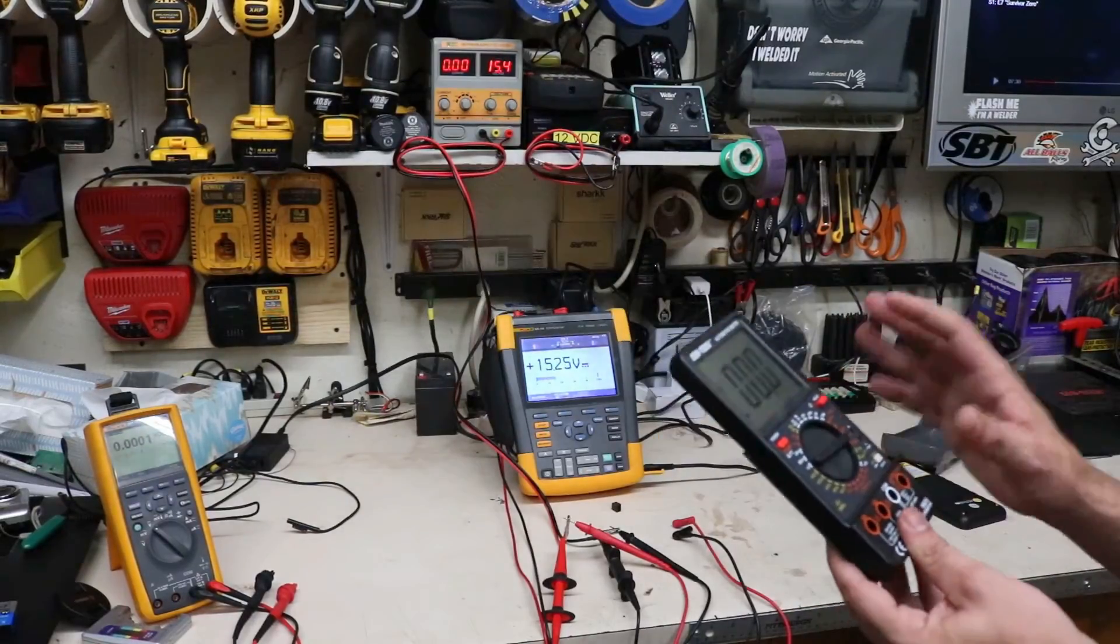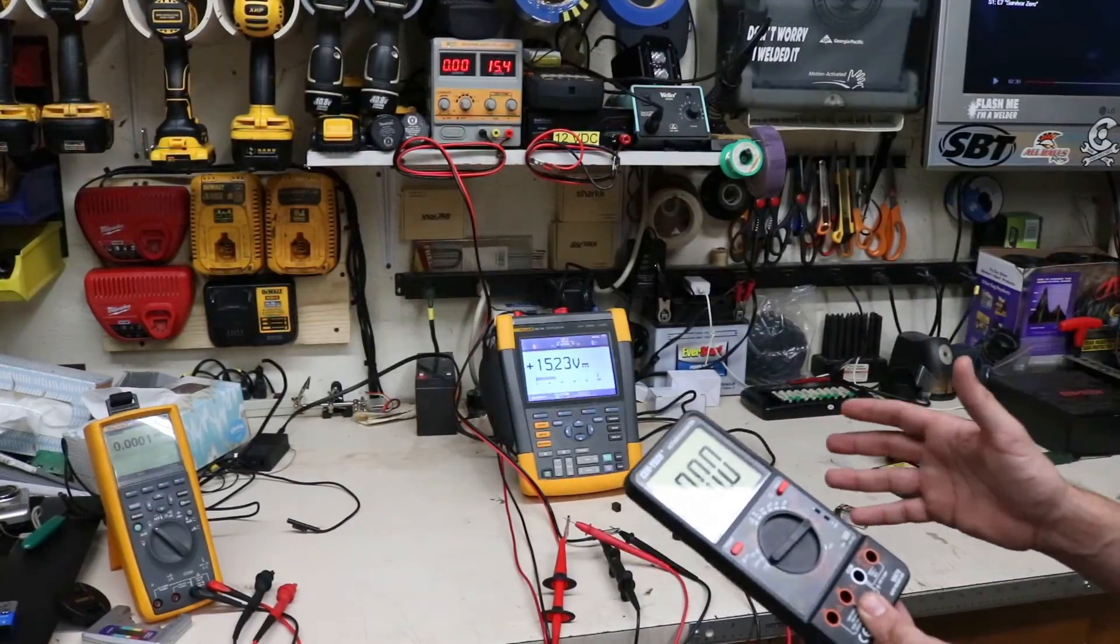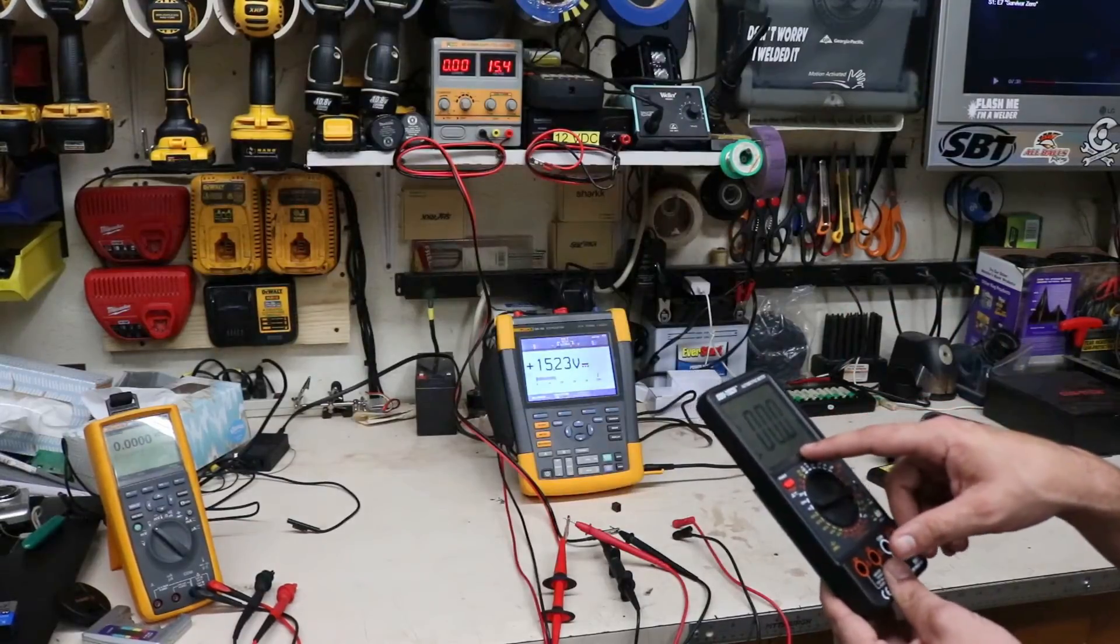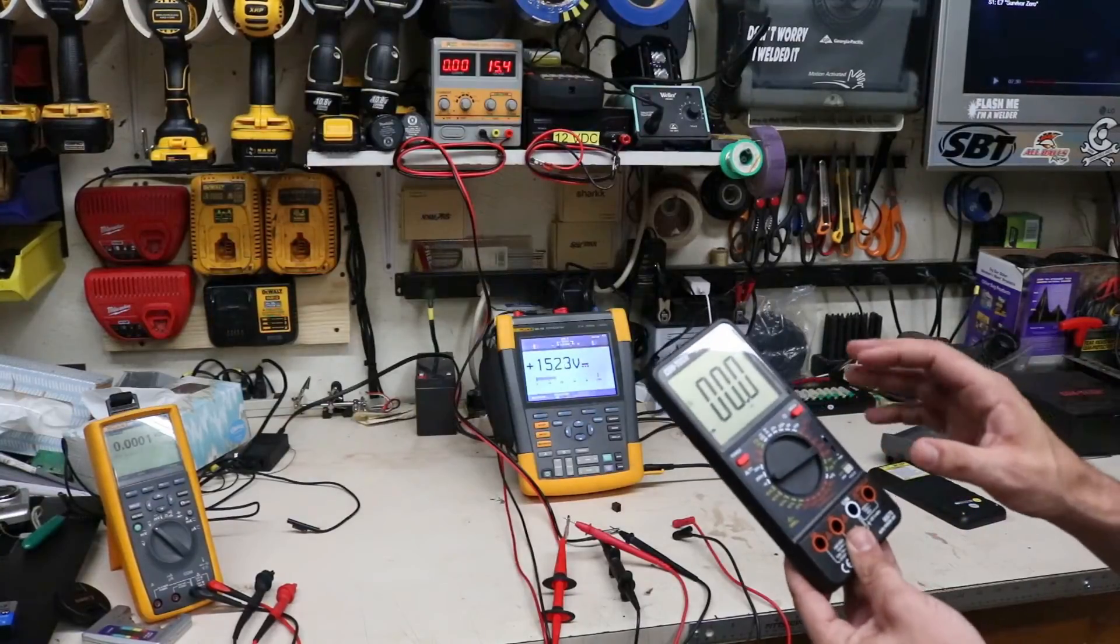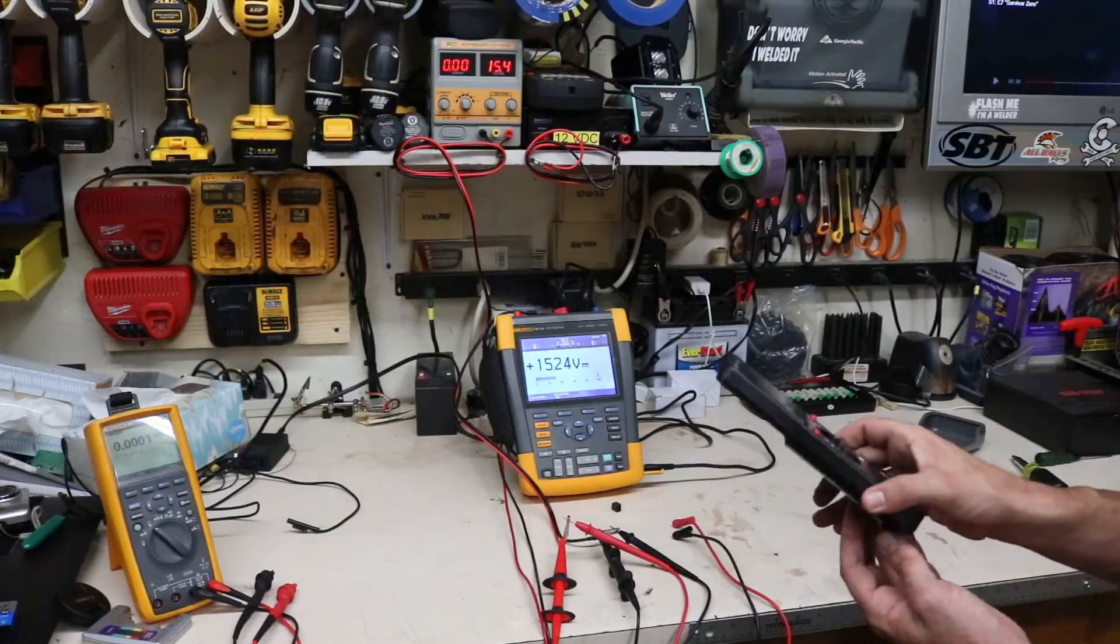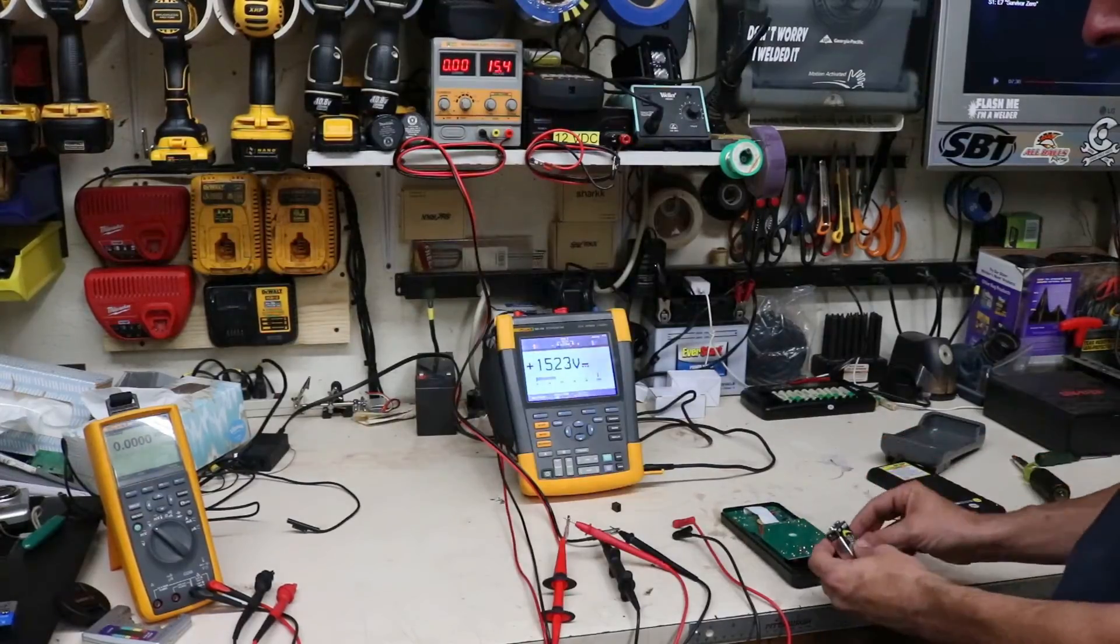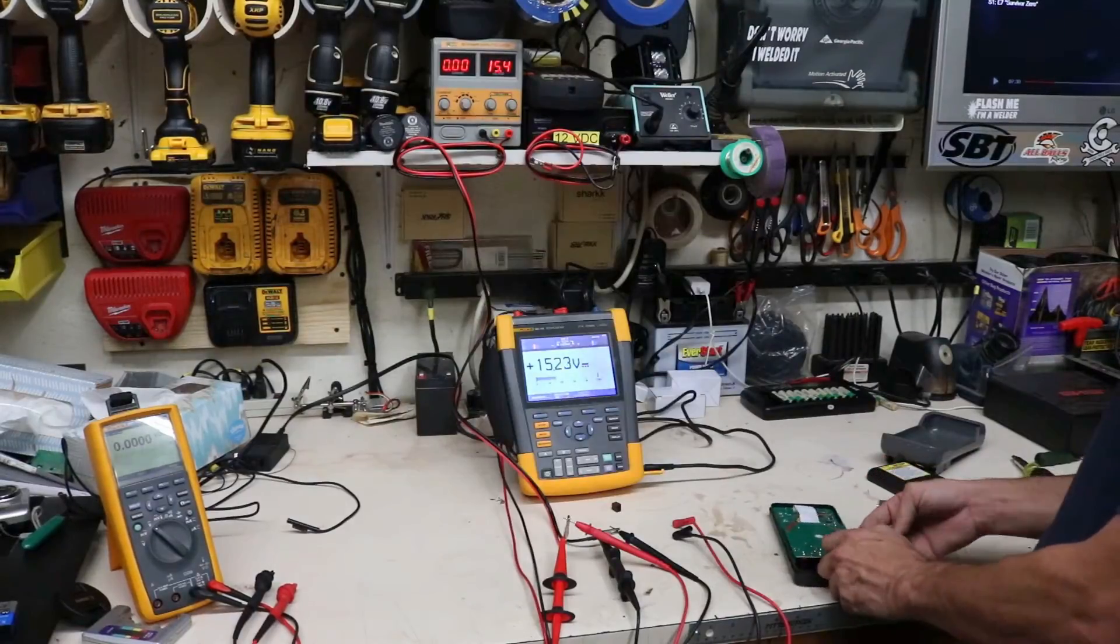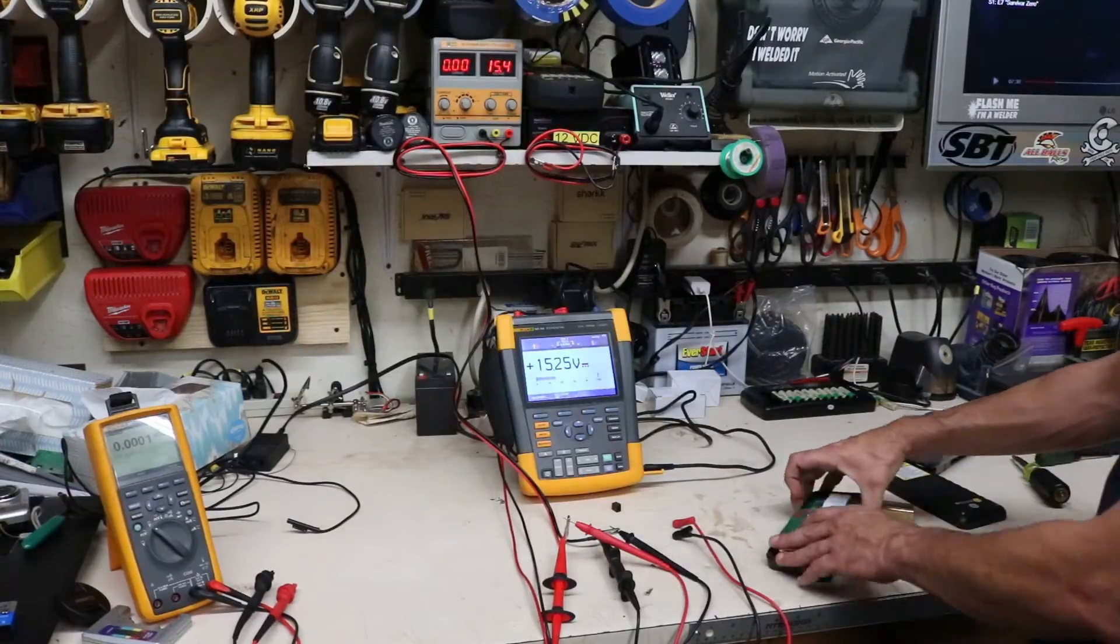So the first thing you want to check with any multimeter, doesn't matter if it's a cheap $20 meter, $100 meter, or a $1,000 meter, is to check the batteries. This one does have a battery indicator on it, and it shows up here in the corner. So the battery is getting low. And as we've seen, we had up to about a 5.5 or 6 volt difference. So the first thing you want to do before you start adjusting it is to put a new battery in it, just to see if that makes any difference in the reading. Because as the batteries start to die in all test equipment, your readings can start to deviate pretty far from what they should be.